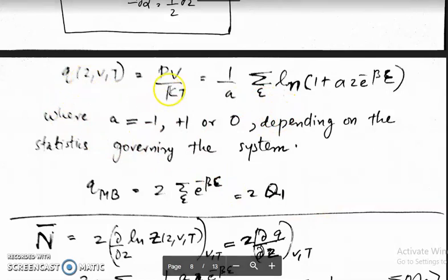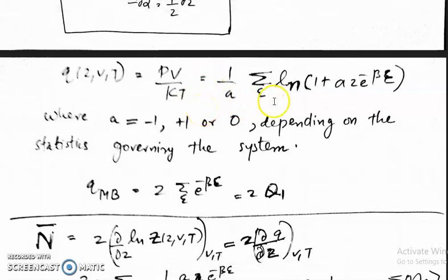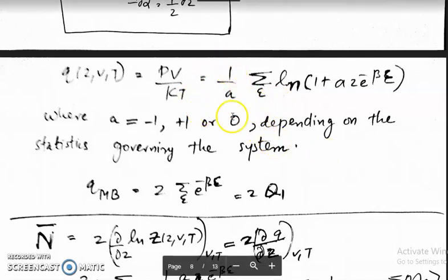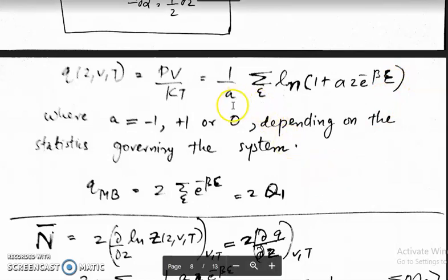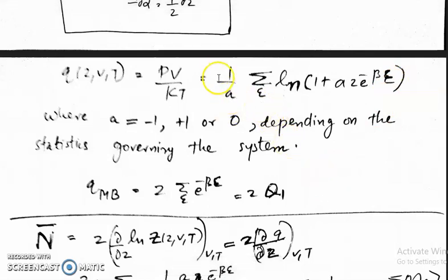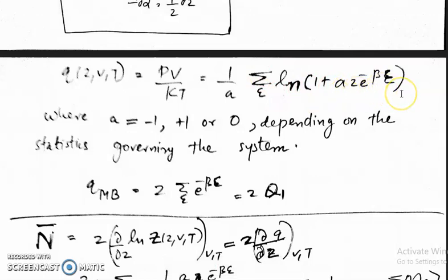The Q potential equals PV/KT equals log of the grand partition function, equals (1/a) Σ_ε log(1 + a·z·e^{−βε}). When you put a = −1, this will become minus Σ_ε log(1 − z·e^{−βε}), which is for the Bose-Einstein case.